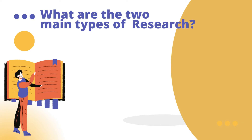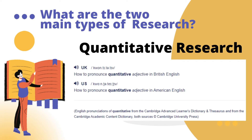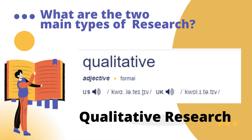How about the two main types of research? First, we have quantitative — pronounced as 'quantitative' in American English and 'quantitative' in British English. Second, qualitative — in American English and 'qualitative' in British English.